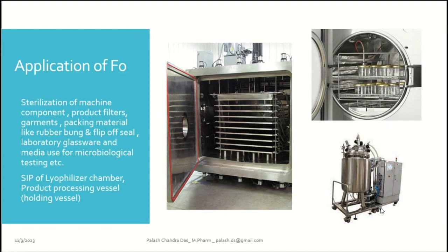Now let's go through some applications where we can apply F0. During the sterilization process, we sterilize machine parts, product filters, garments, and packing materials like rubber stoppers and flip-off seals. In the laboratory, we sterilize glassware and media used for microbiological testing. When using the SIP — Steam-in-Place — process for sterilizers or product processing vessels like holding vessels, it is essential to calculate F0 values, as both are saturated steam sterilization processes.